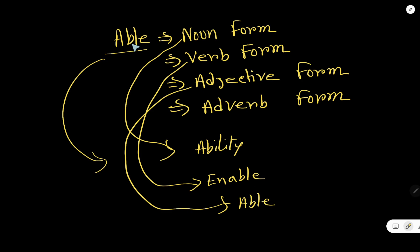That is, the adjective form of the word able is able. You know that adjective form has four different degrees: positive degree, comparative degree, and superlative degree. So what are the three degrees of able?